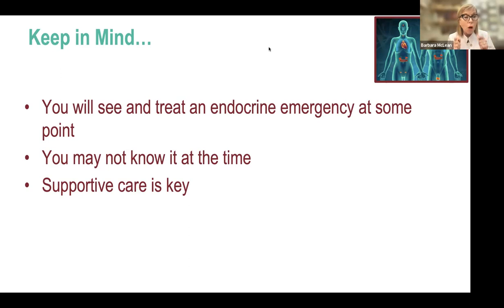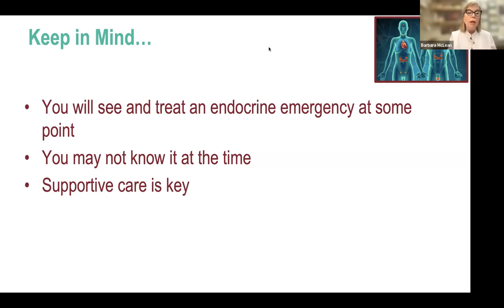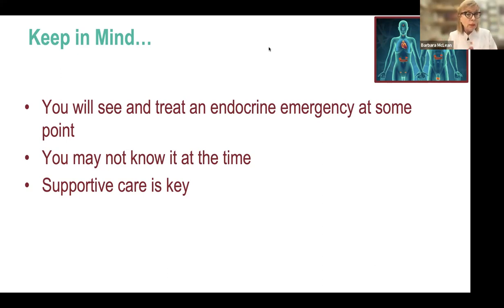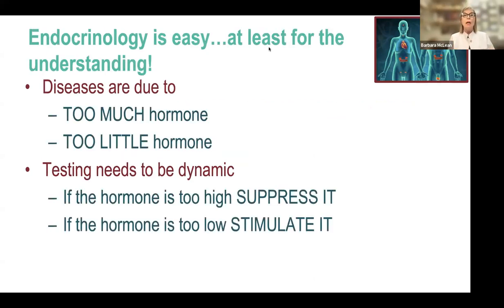Always remember that at some point you will recognize a patient in an acute endocrine emergency. Typically for us it's about hyper- or hypoglycemia, but it can also be thyroid storm, severe hypothyroidism, or adrenal insufficiency that is causative in critical illness. That's a really important perspective — sometimes you don't recognize it at the time, but the care, evaluation, and replacement of endocrine function can make the difference between life and death.